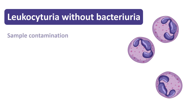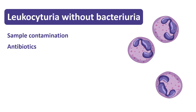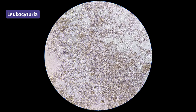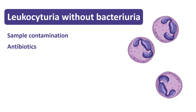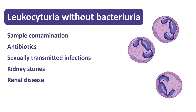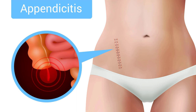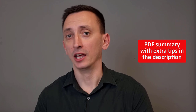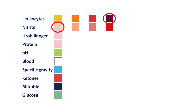There are many causes of leukocyturia that don't have anything to do with urinary tract infection. For example, sample contamination with leukocytes is actually very common. Or if your patient has already started taking antibiotics, this may be the reason why there are leukocytes but no bacteria in the sample. There are also more serious causes of leukocyturia without bacteriuria like STDs, tumors, kidney stones, renal disease. Even a powerful inflammatory response within the abdominal cavity like appendicitis or diverticulitis can result in leukocyturia without bacteriuria. So if you find signs of leukocytes in urine but no bacteria, be very careful.